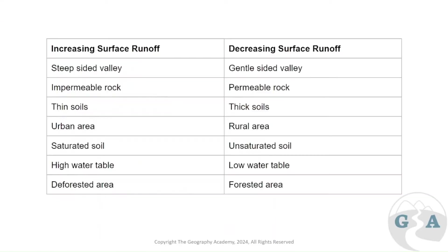So, increasing and decreasing surface runoff — what causes this to happen? Remember, surface runoff is faster than through flow and faster than groundwater flow, so the impact surface runoff can have in the drainage basin is really significant. We need to understand all these factors to understand the movement that happens after a precipitation event in the drainage basin.